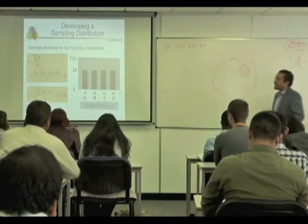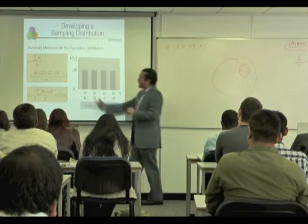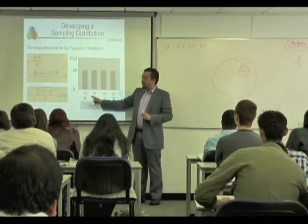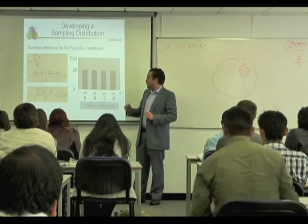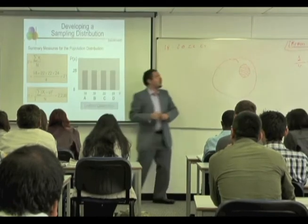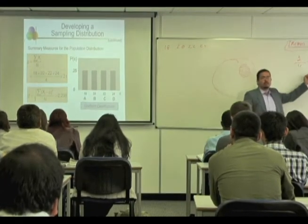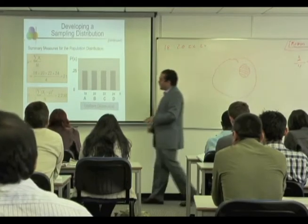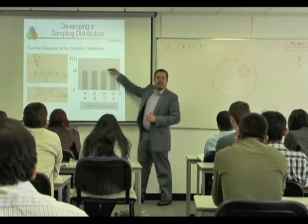Another thing that we do in statistics is attempt to forecast things — in other words, to predict if something is going to happen or not. For example, I have Mr. A at 18 years old, B at 20, C at 23, and D at 24, and every single one of them has a chance of 25% or 0.25. That's the probability.